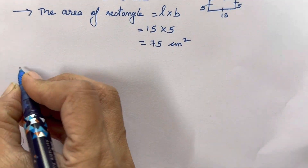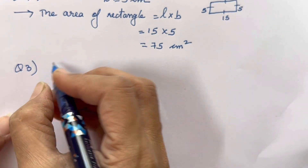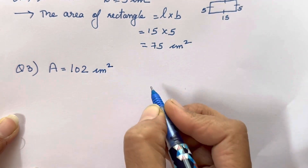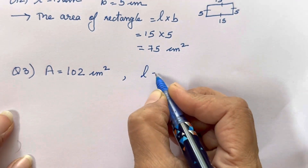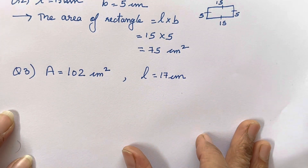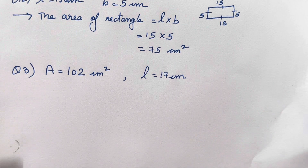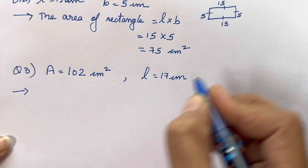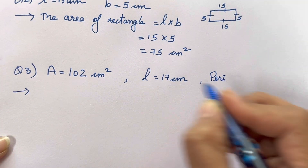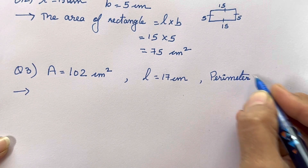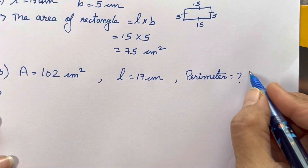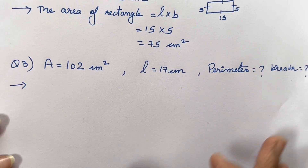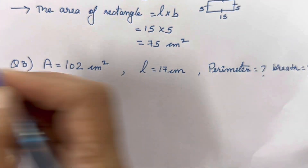Now the third question. The area of a rectangle is 102 centimeter square and its length is 17 centimeter. Find its perimeter. You can refer to the question from the textbook. So first we have to find the perimeter, which means we also have to find the breadth. So two things we need to find. Finding the breadth is easy because we will get it through the formula itself.